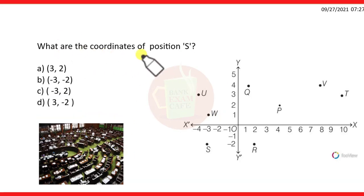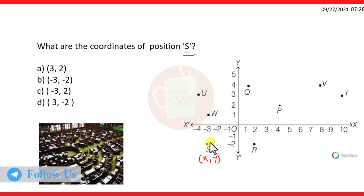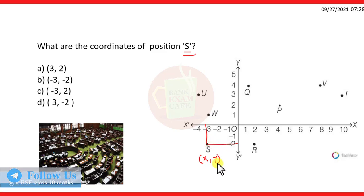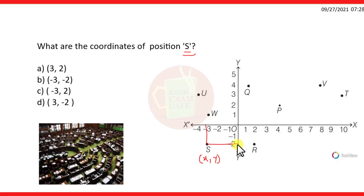The next question: what are the coordinates of position S? We have to write the X and Y coordinates. We draw lines from the point S. The X coordinate is the distance from the Y axis. The distance from the Y axis is 3 units, but since it is on the negative side, the coordinate is minus 3.